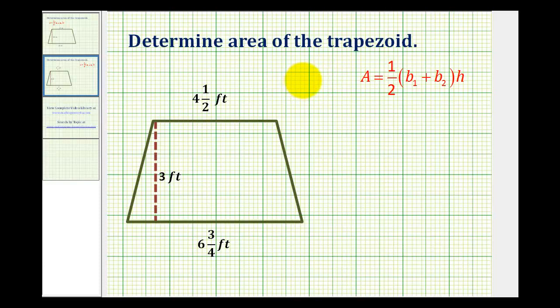A trapezoid is a quadrilateral that has one pair of parallel sides. Looking at our figure here, notice that this side here is parallel to this side here.